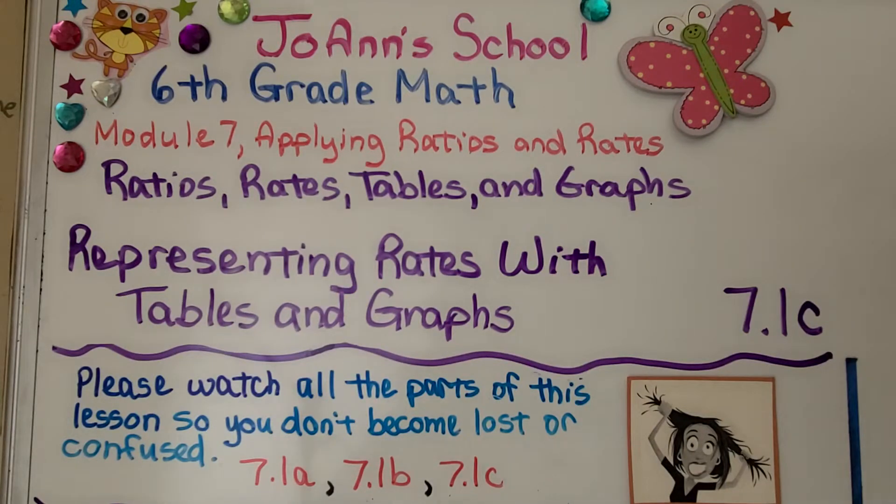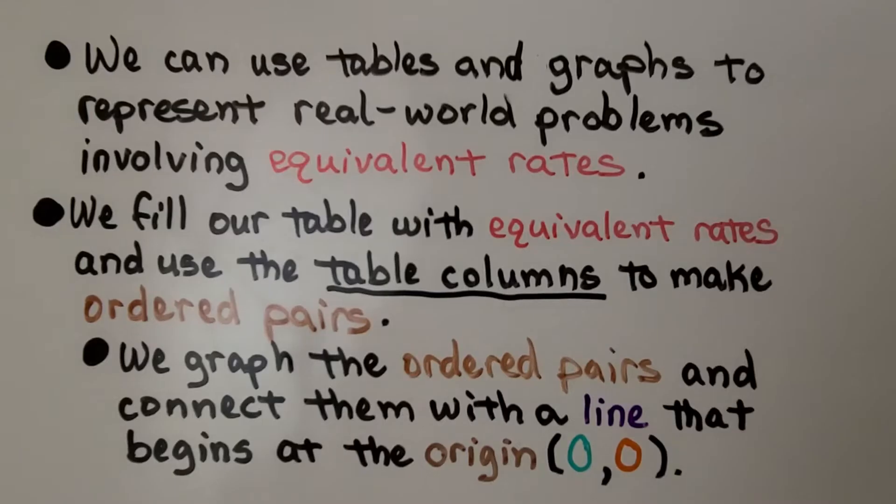Lesson 7.1c, Representing Rates with Tables and Graphs. We can use tables and graphs to represent real-world problems involving equivalent rates. We fill our table with equivalent rates and use the table columns to make ordered pairs. We graph the ordered pairs and connect them with a line that begins at the origin, (0,0).